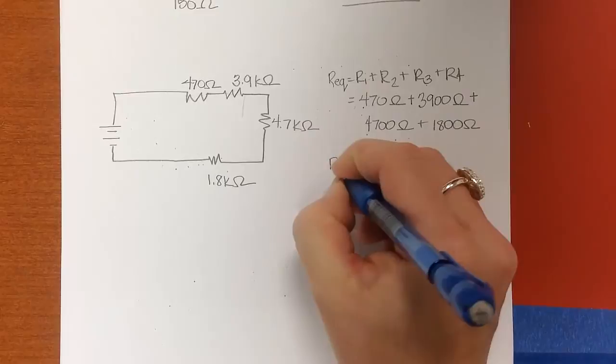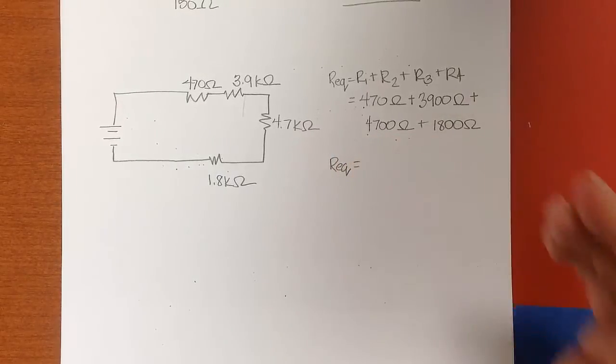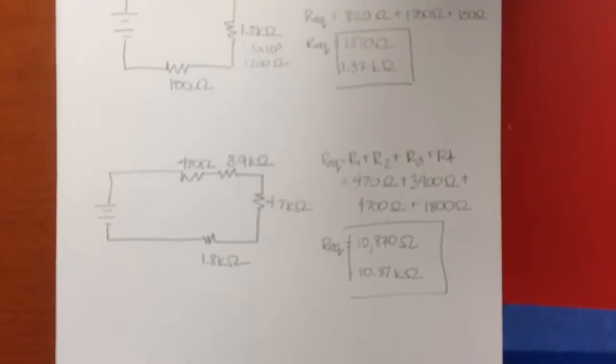And the equivalent resistance is going to be, we'll just add those up. So that last little bit got cut off, but you see when you add them up, you get 10,870 or 10.87 kilo ohms. Hope that helps.